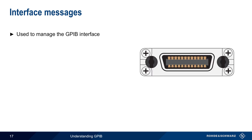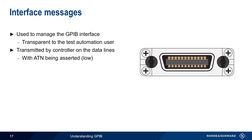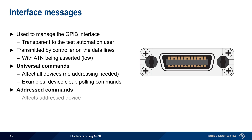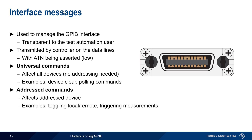Interface messages are used to manage the GPIB interface itself rather than the attached device, and for the most part these messages are transparent to the user — they're not explicitly coded or controlled by test automation. These messages are transmitted on the data lines with the ATN line asserted. Interface messages fall into two categories: universal commands, which affect all instruments and do not require addressing (examples include commands for clearing or resetting devices or commands used in polling); and addressed commands, which only affect a specific addressed device (examples include toggling between local and remote modes and triggering measurements).